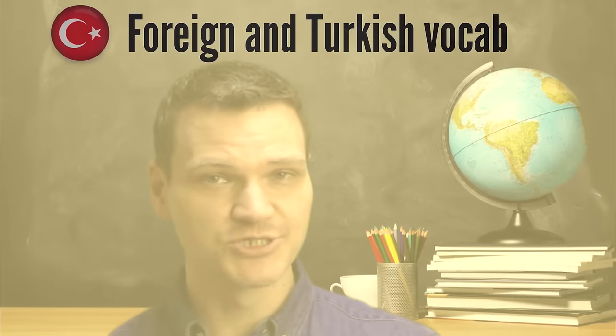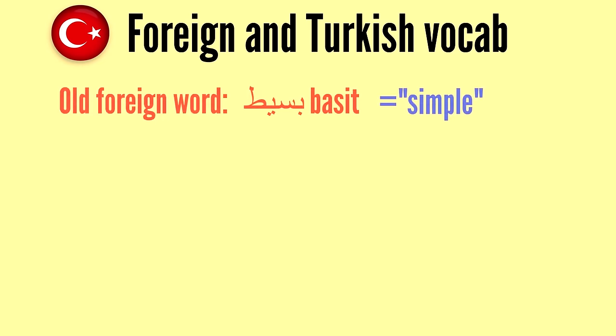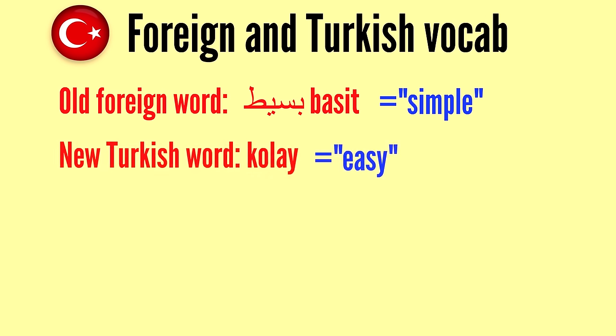Some of those foreign loanwords in Turkish still exist alongside native Turkish words, so sometimes there are two words for the same thing — one Turkish and one Persian or Arabic — and they might have the same meaning but are used in a slightly different way, or have a slightly different sense.